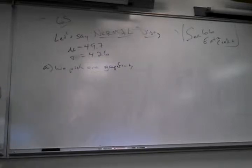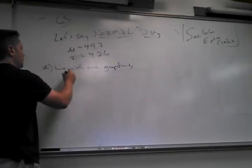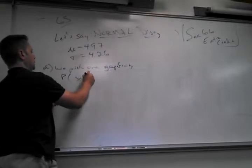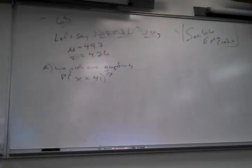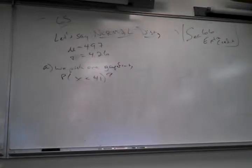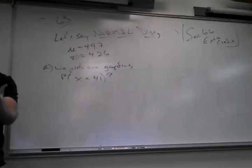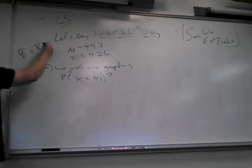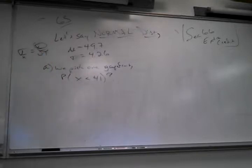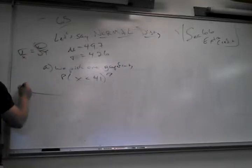Those two things — taking a sample and asking about the sample mean — have to happen in order to change the standard deviation. If you divided by the square root of 1, it stays the same anyway. So this formula is always technically true. My picture is a bell curve with 49.7 in the middle. The value 41 is way down there, and I want less than — which is nice.